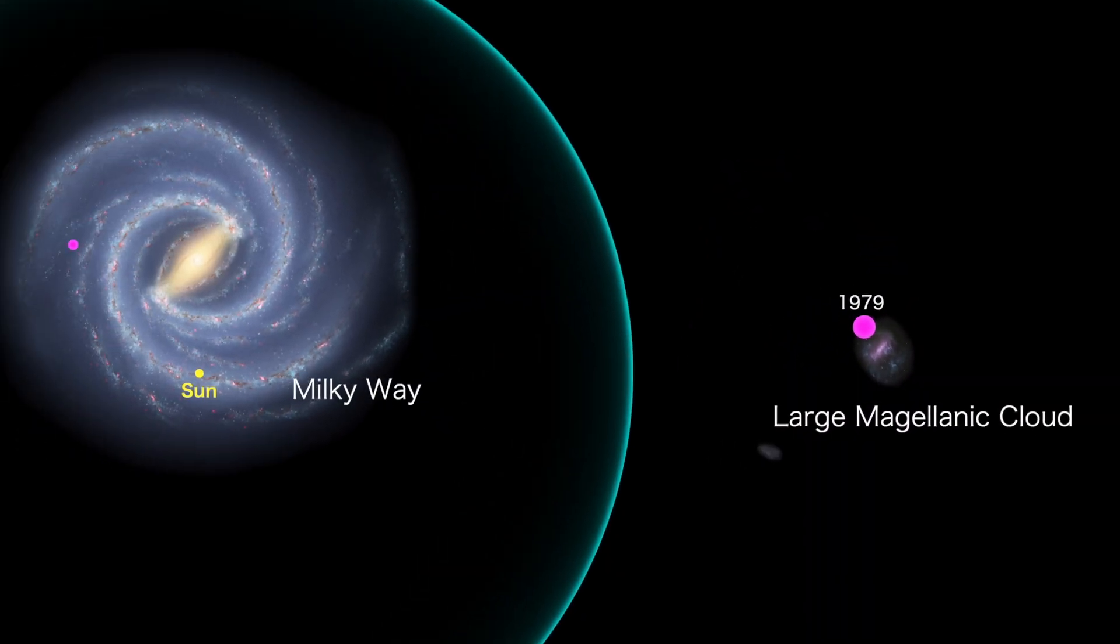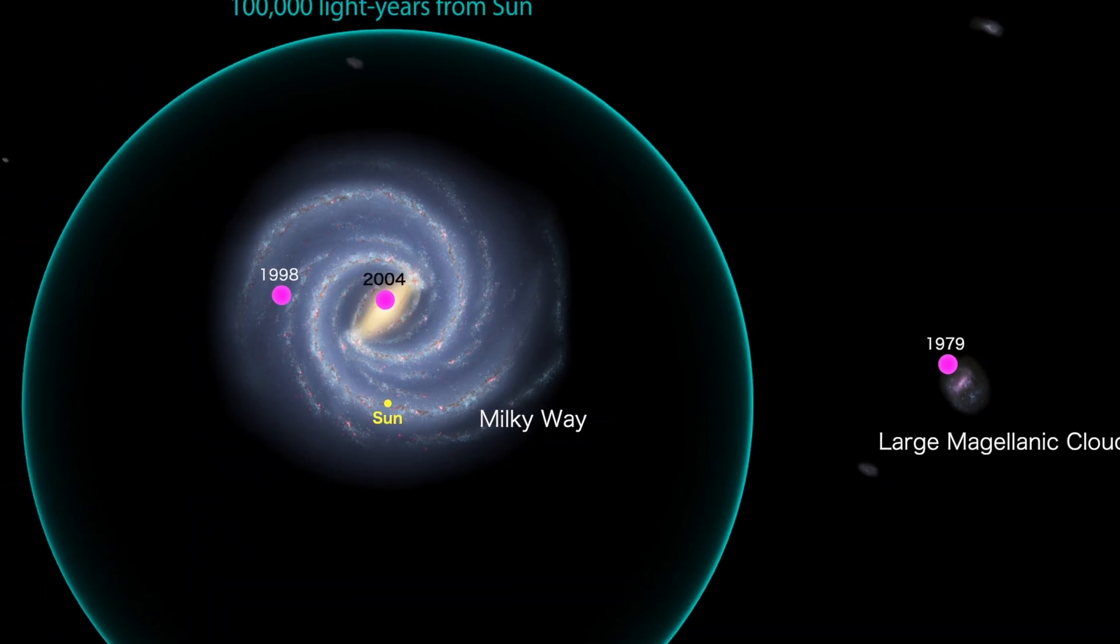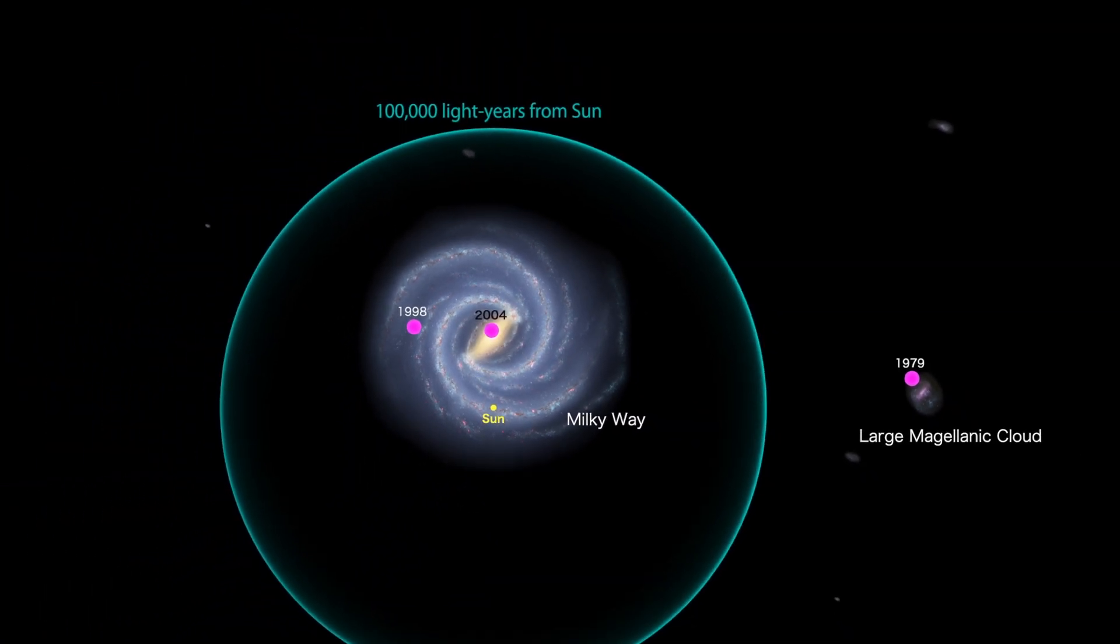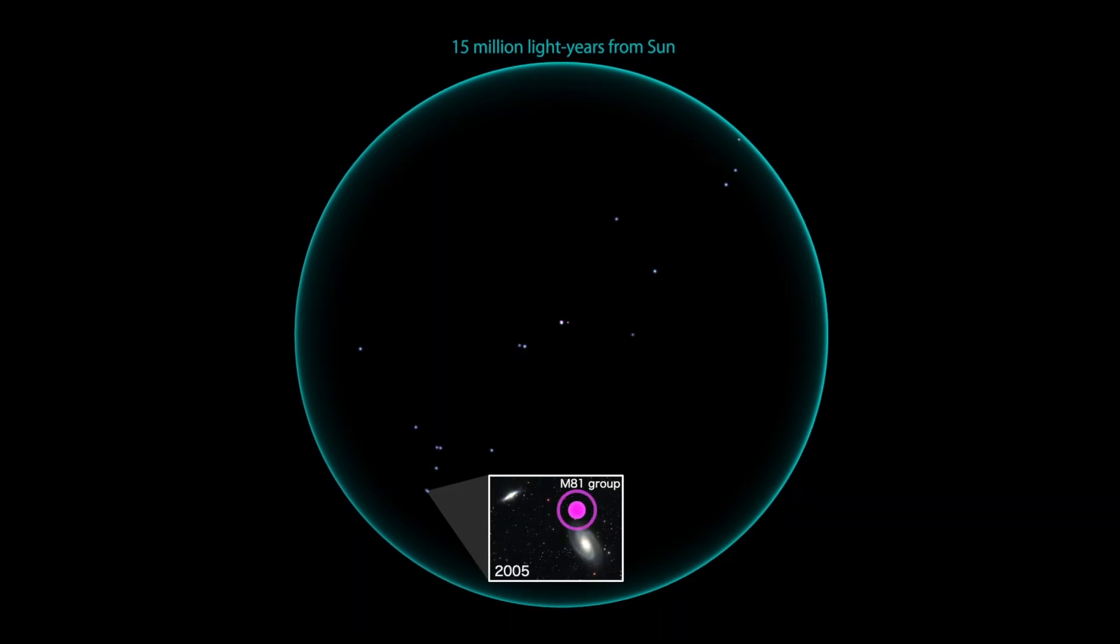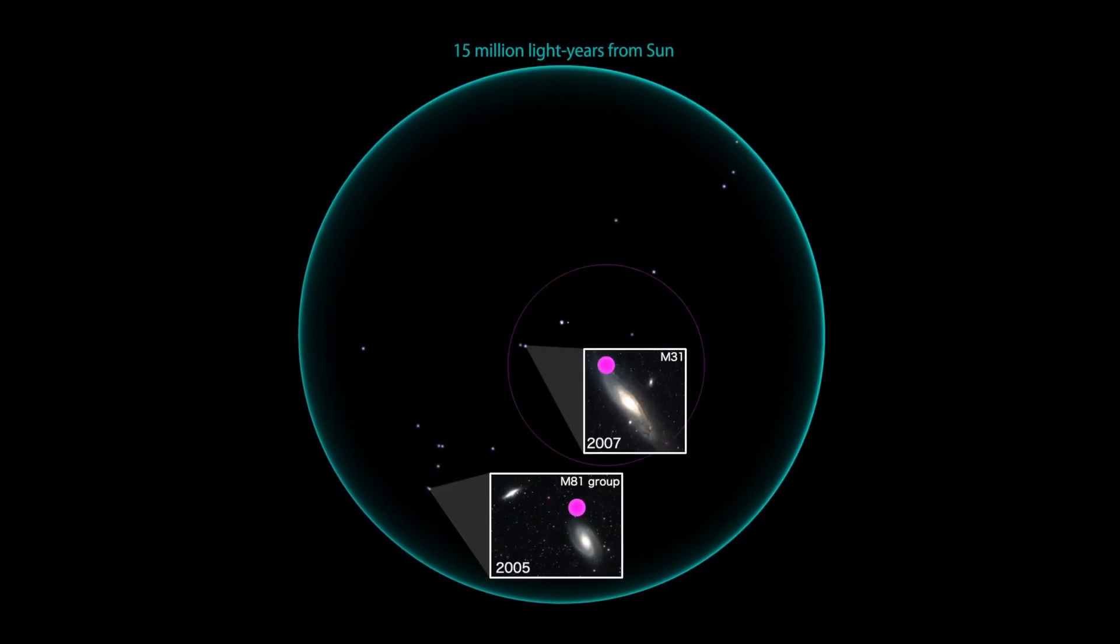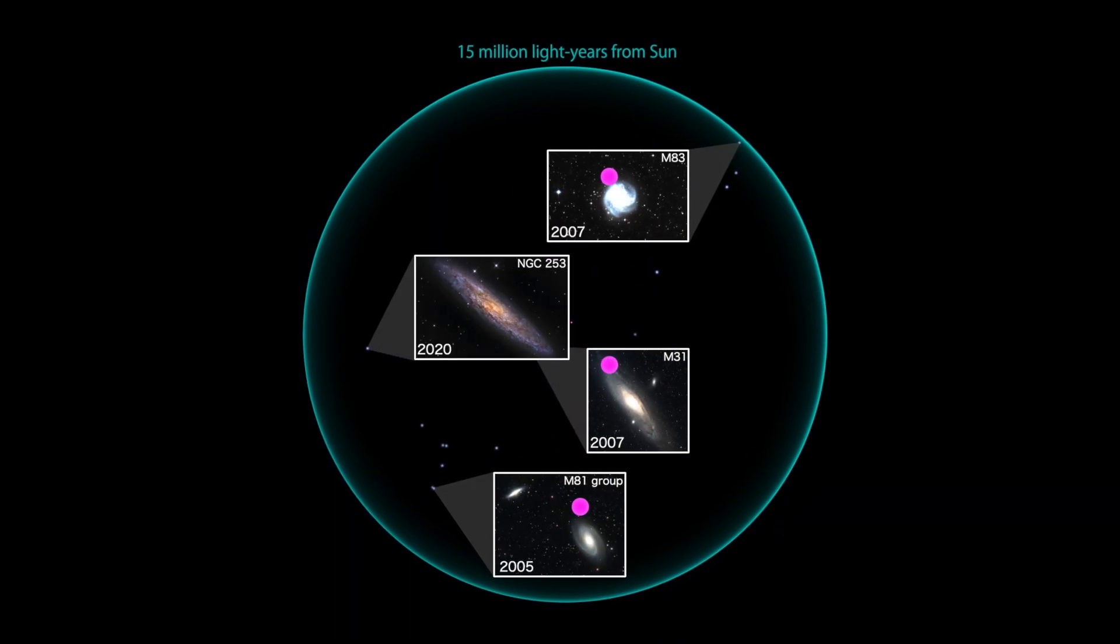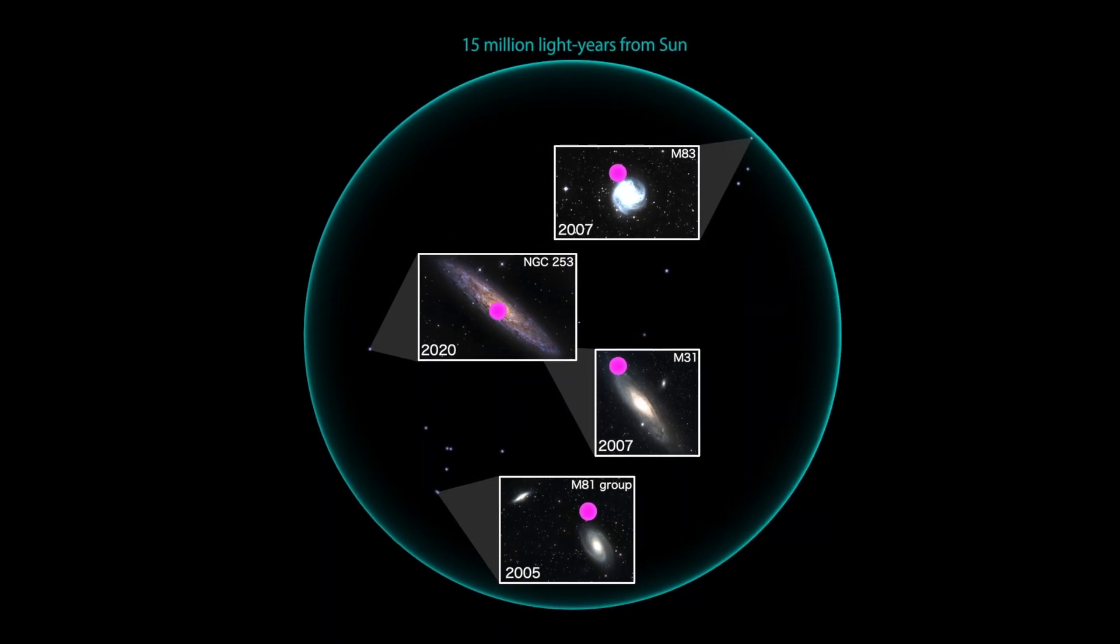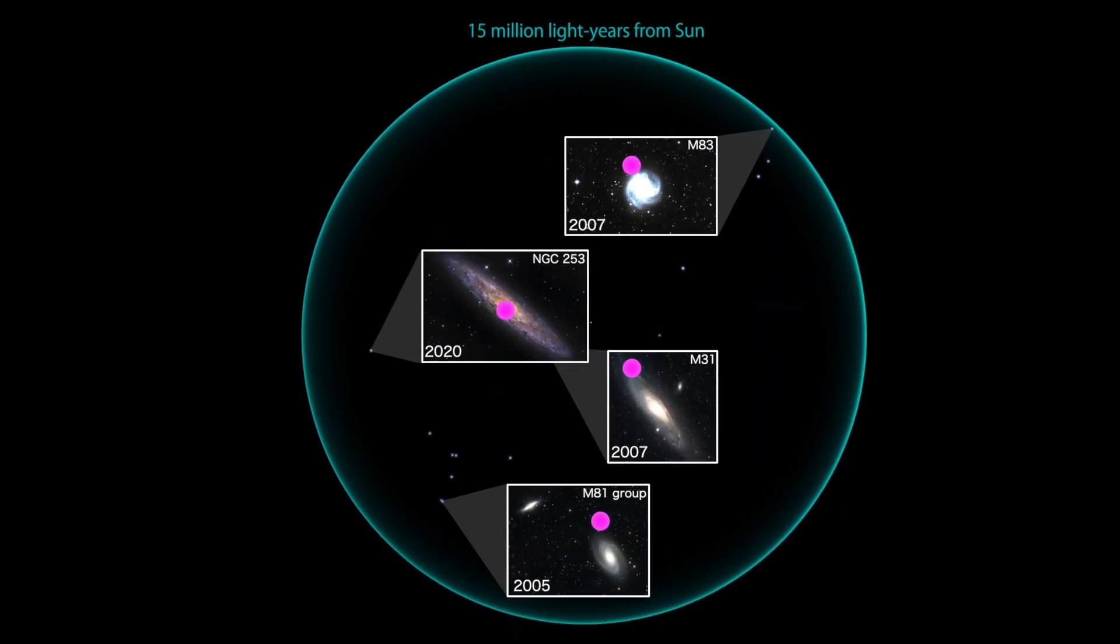This fueled astronomers' growing suspicions that short GRBs associated with galaxies in our neighborhood might really be magnetar giant flares. Now, the precise localization of the 2020 event to the disk of the Sculptor galaxy has unmasked them at last.